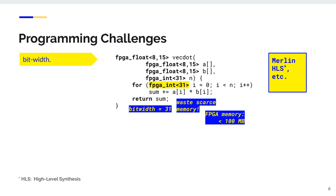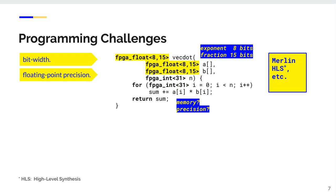For example, even the largest FPGA nowadays only has tens of megabytes of memory. Therefore, developers need to optimize the bit width to save space, which depends on the input. Traditionally, they allocate integers with a fixed bit width large enough for all possible input values, which wastes memory. Likewise, they need to tune the precision of floating-point numbers to trade off between precision loss and memory.